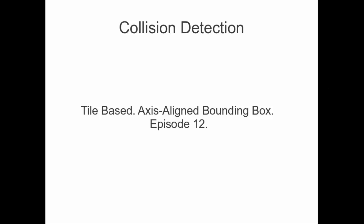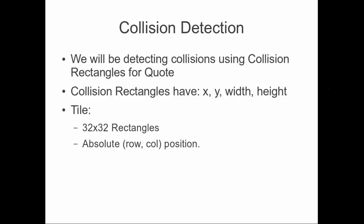We're doing a mesh of those, and this is how Mario does it, how Cave Story does it — in particular Cave Story obviously. We're going to be detecting collisions using collision rectangles, and for our map we're going to be using tiles. The tiles are going to be 32 by 32 rectangles, or more specifically squares, at a row-column position — kind of how we have our map drawing right now at columns 0 through 20 of row 11.